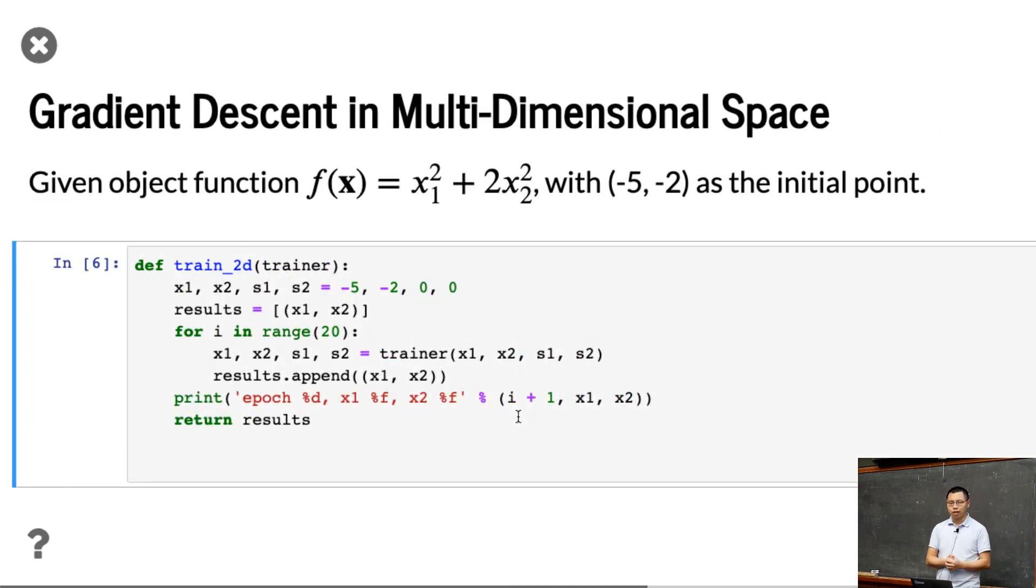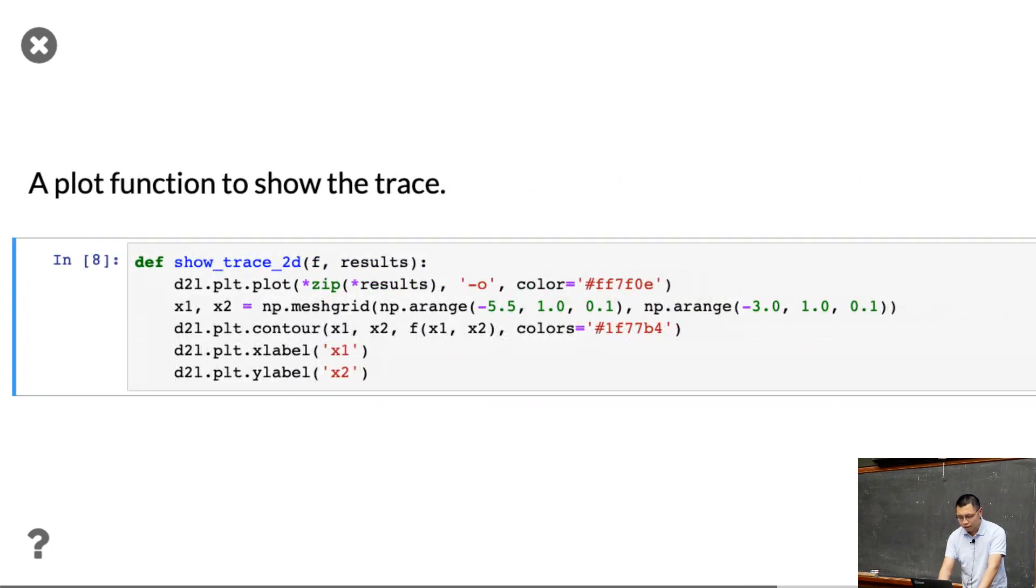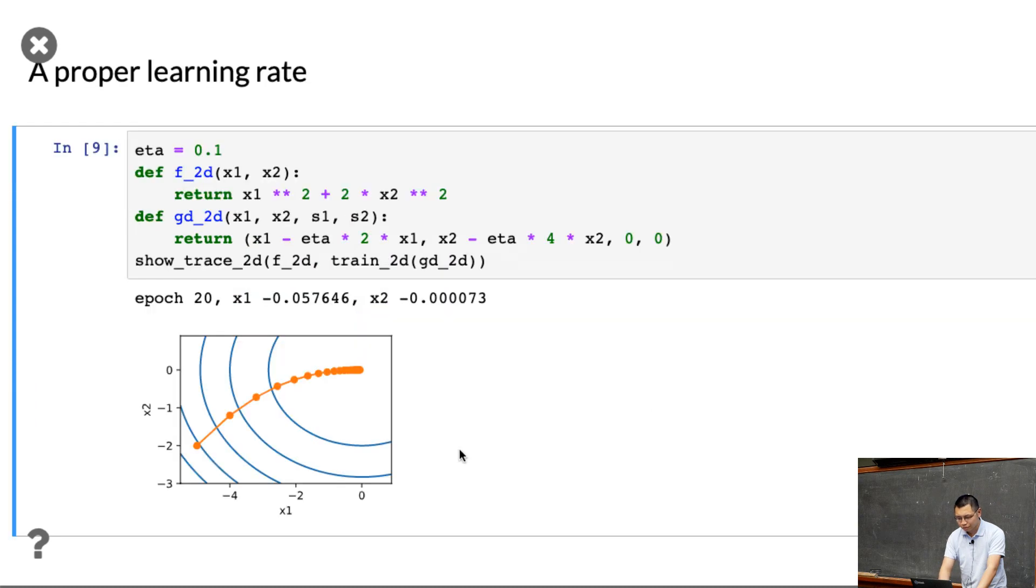This is a little bit of visualization, and here we train another function, as two dimensions. The second dimension is a little bit larger, is 2x₂². The first dimension is a little bit smaller. And we're using (-5, -2) as an initial point. And here's another function that lets you visualize the results. So here we assume the trainer will accept the current x1 and x2, this is the two dimensions of x, and with an additional state. We will talk about state in a minute. So assume we have state one, this state for the first dimension, x2 state for the second dimension. Every time we update both the point and both the state, and we can visualize it. Let me run that one. Okay. That's another function to show the trace.